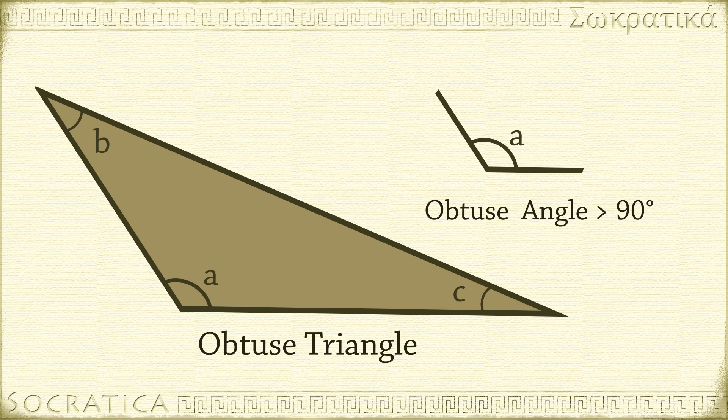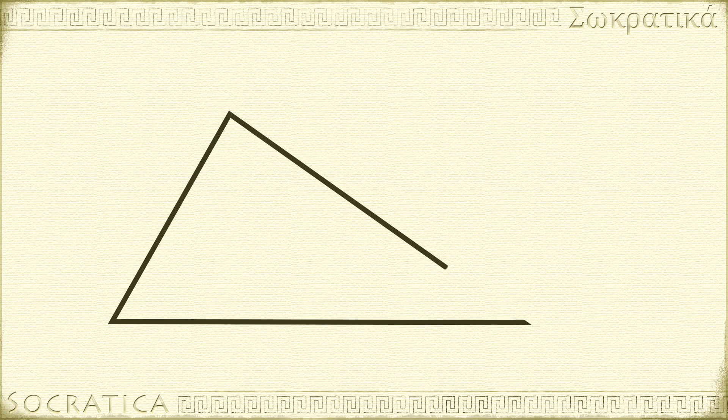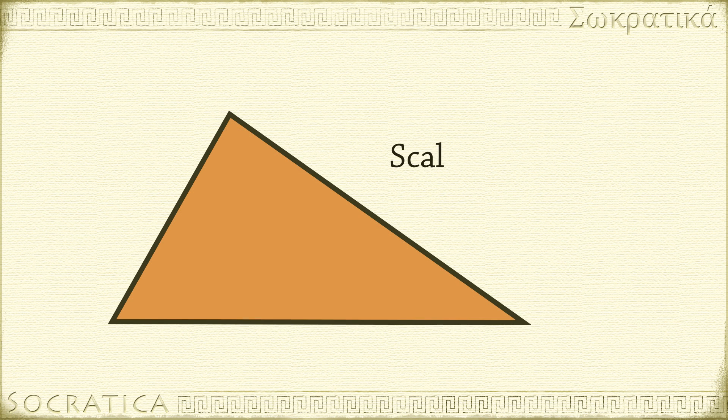Just as triangles have specific names depending on their angles, they can also be classified by the lengths of their three sides. A triangle where all sides are different from one another is called a scalene triangle.